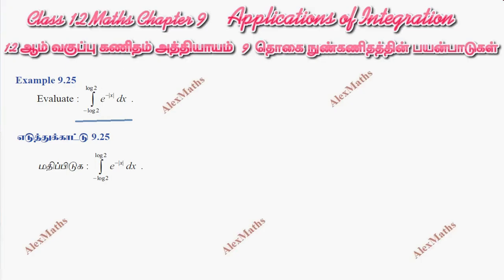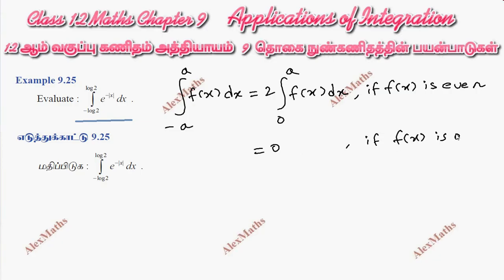For the integral from minus a to plus a, we use the property: integral from minus a to a of f(x)dx equals two times the integral from zero to a of f(x)dx if f(x) is even, or zero if f(x) is odd. An even function means f(minus x) equals f(x).